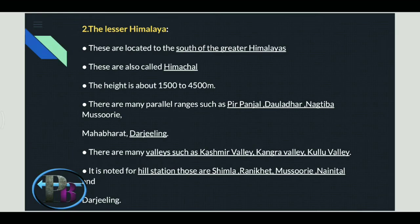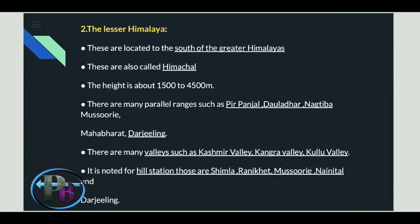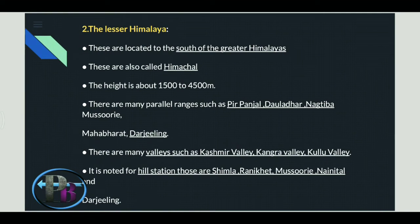Valleys located in the Lesser Himalaya include the Kashmir valley, Kangra valley, and Kulu valley. Hill stations found here include Shimla, Ranikhet, Mussoorie, Nainital, and Darjeeling. We need to remember which hill stations and valleys are located in the Lesser Himalaya.